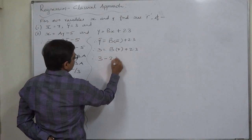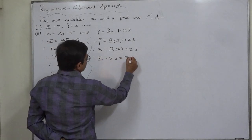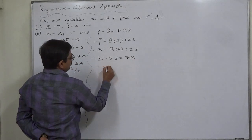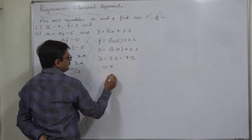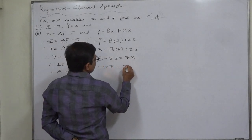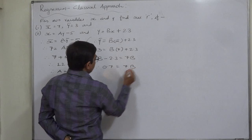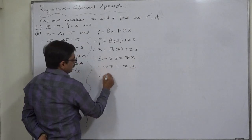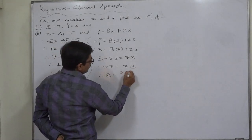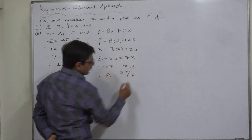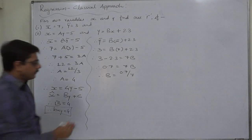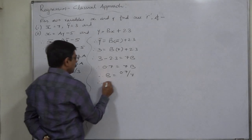Therefore, 3 minus 2.3 equals to 7b. Therefore, 0.7 equals to 7b. Therefore, b equals to 0.7 divided by 7, and that means b equals to 0.1.